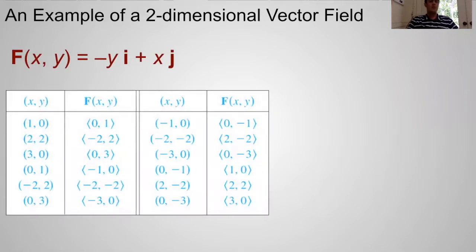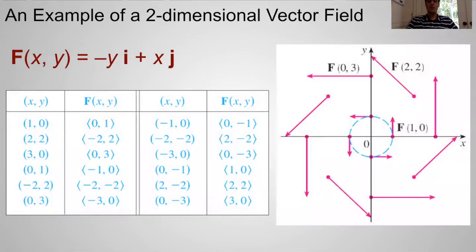To graph the vector field shown here, we will have to draw a vector at each point. For simplicity, I put some selected points in the corresponding vectors in this table. As we can see here, at point (1,0), we have a vector of (0,1) pointing in the y direction. We see the similar pattern at the other points.